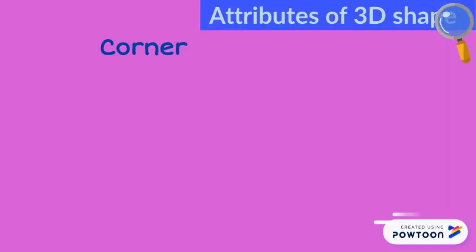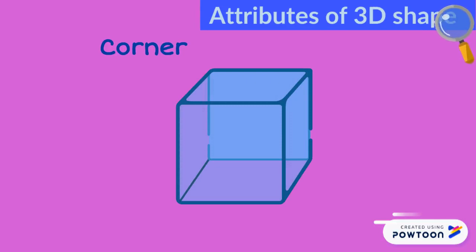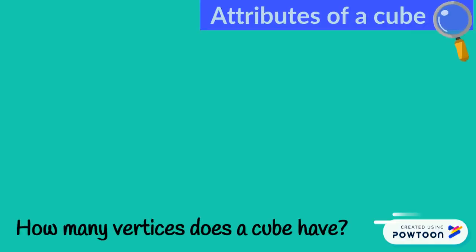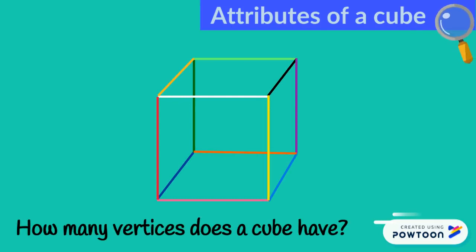We also have a corner. A corner is where two or more edges meet. A corner can also be called a vertex. How many vertices does a cube have? Let's count together. One, two, three.